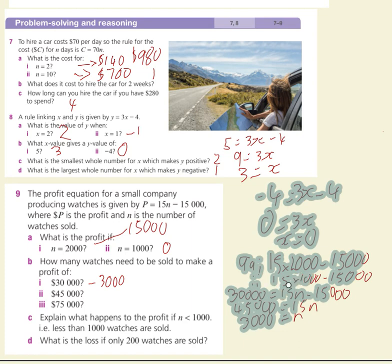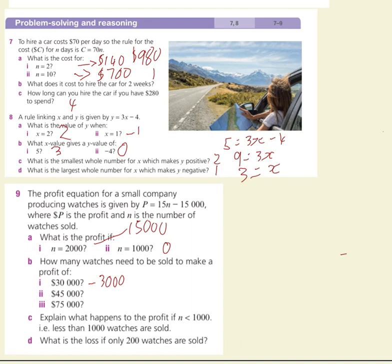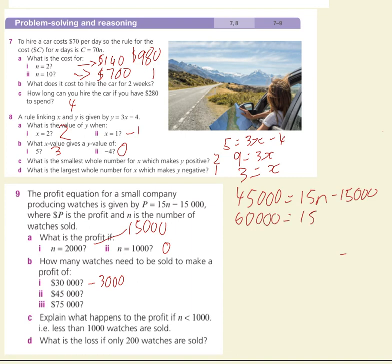For a profit of $45,000: replace P with 45,000, so 45,000 equals 15n take 15,000. Add 15,000 to both sides to get 60,000 equals 15n. Divide both by 15 to get n equals 4,000.